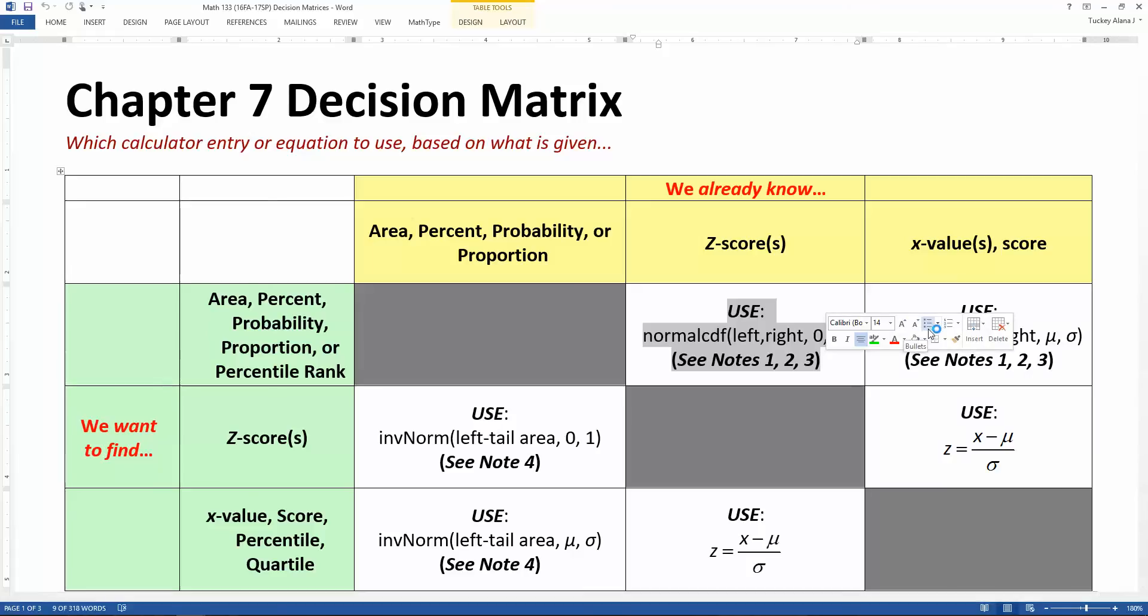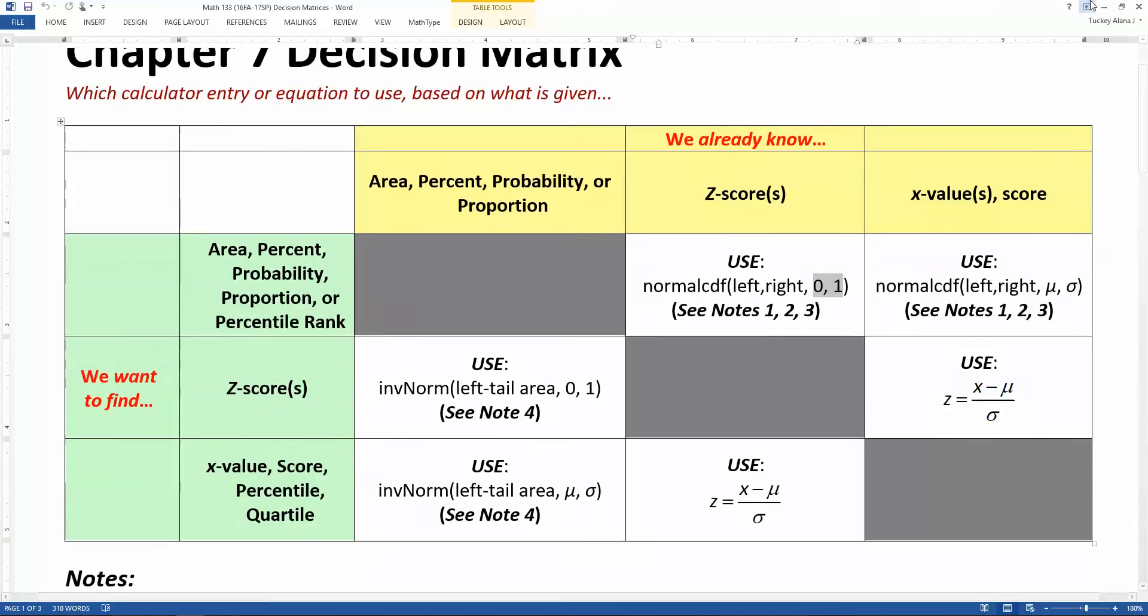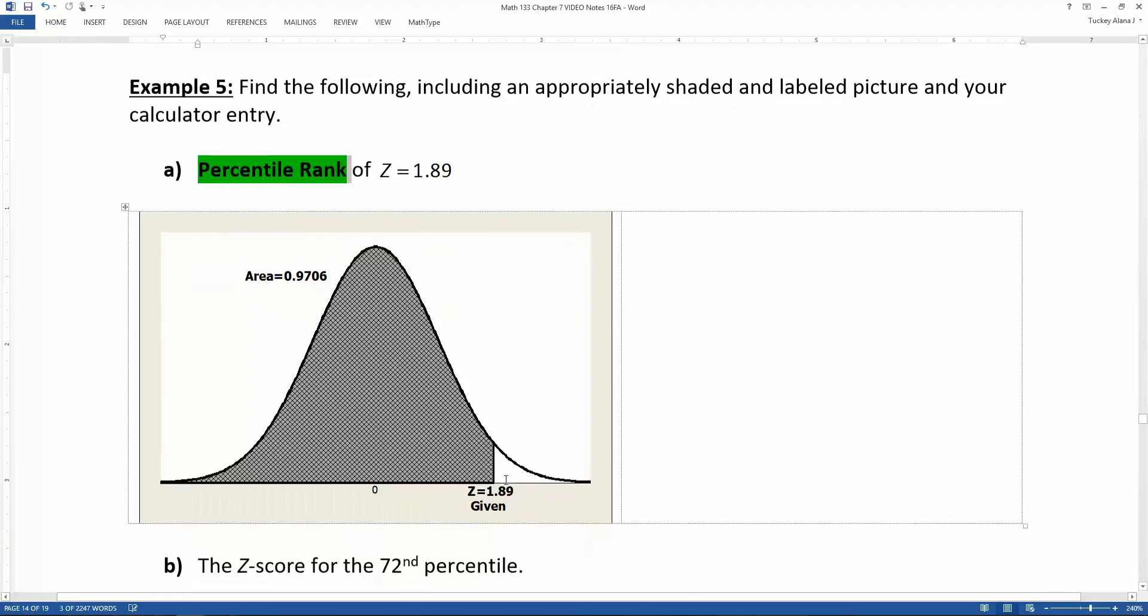So we look at this decision matrix and it says you want to find the percentile rank. You know the z score of 1.89. That means you're going to be using normal CDF. And just like regular normal CDF, it goes left, right, lower bound, upper bound. But the mean and the standard deviation are even simpler with the z score because it's always zero and one.